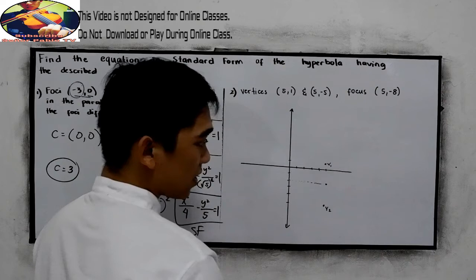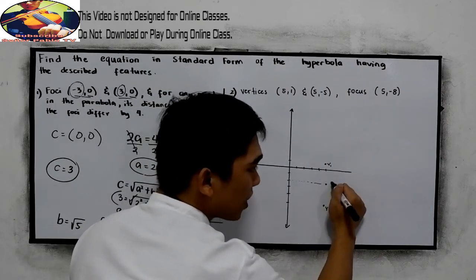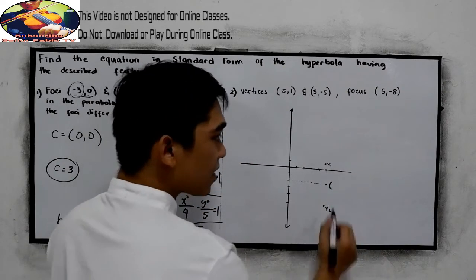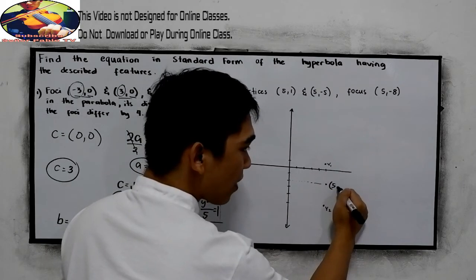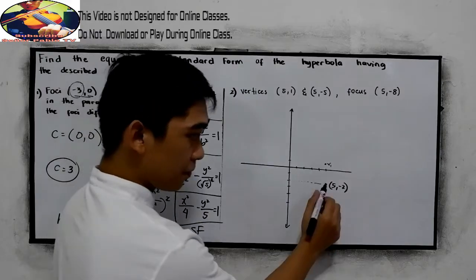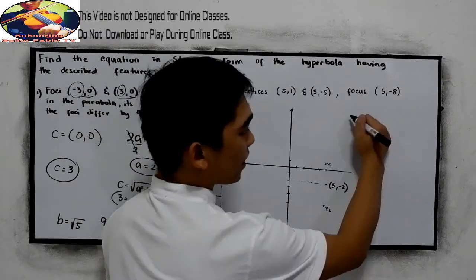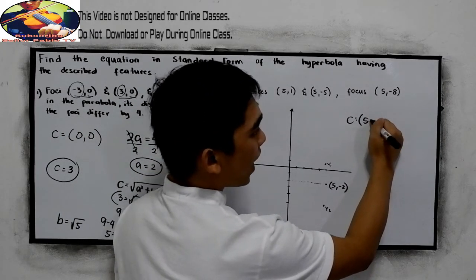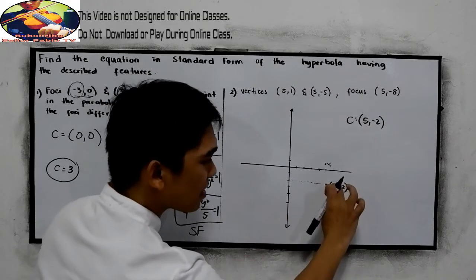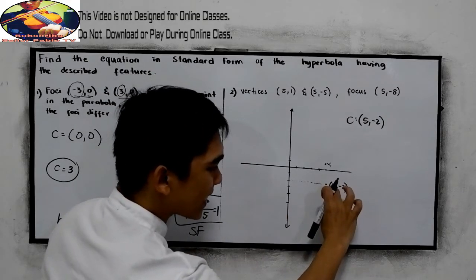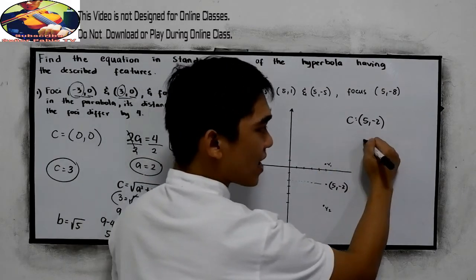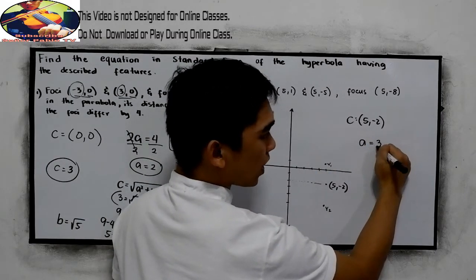The distance must be the same. So the coordinates of our center are (5, -2). This is our center at (5, -2). From the center to each vertex, the distance is 3 units. That is a, so a equals 3.